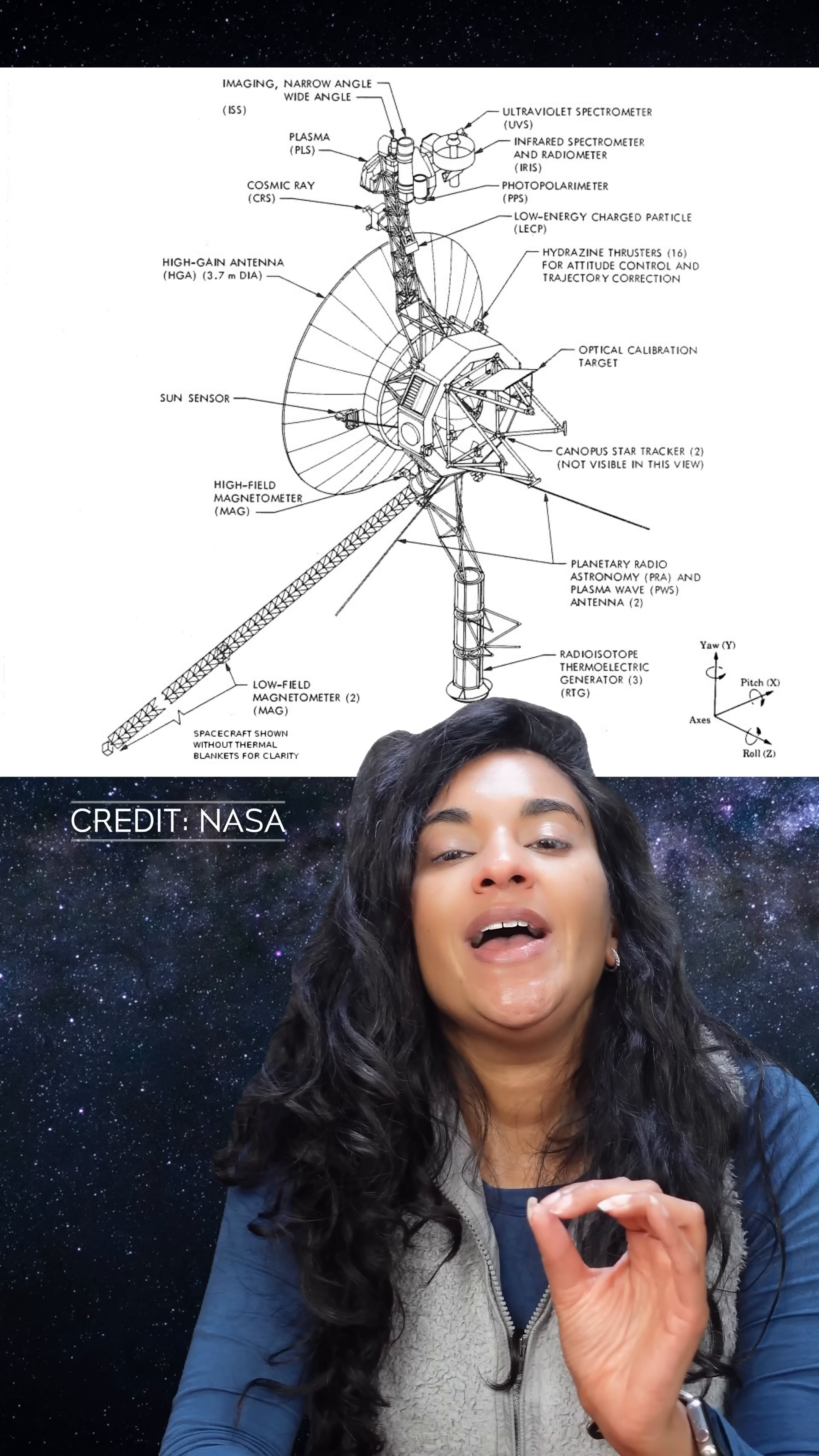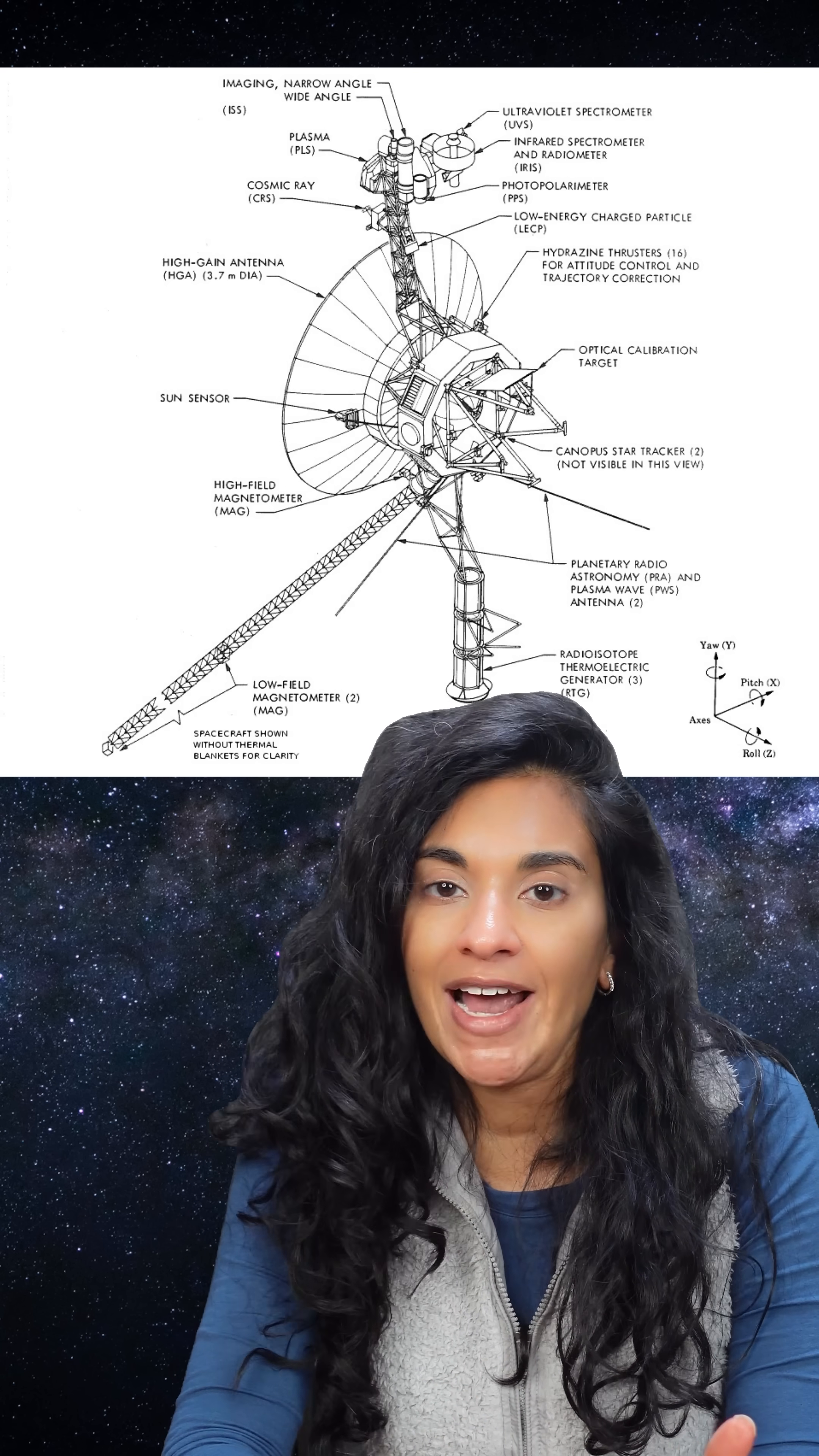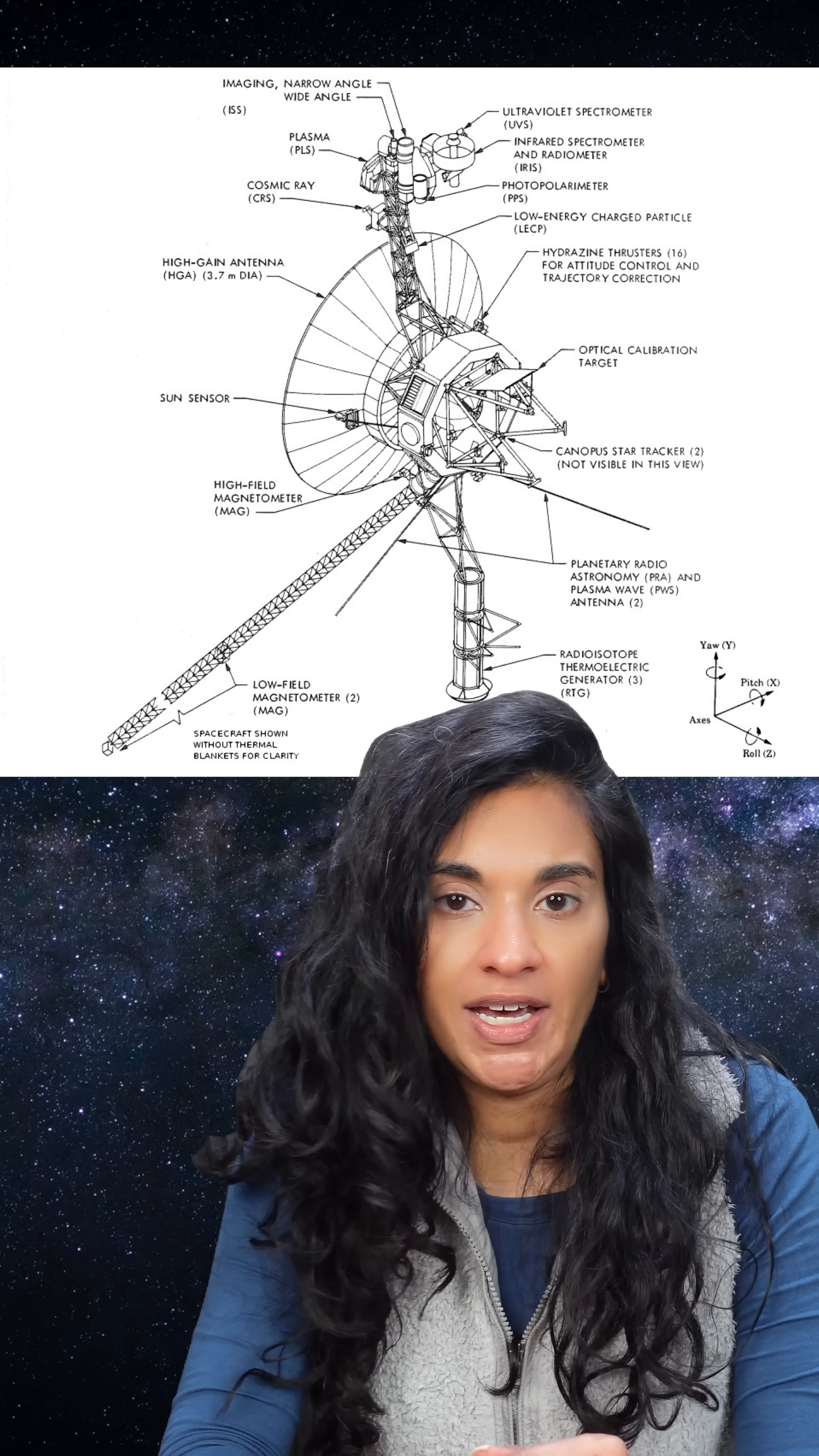But what made fixing the probe exceptionally complicated was that the S-band transmitter was so low power, it couldn't transmit science or engineering data back to Earth. That's why it was switched off decades ago.